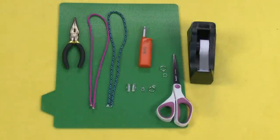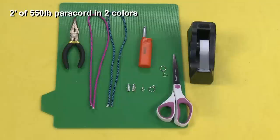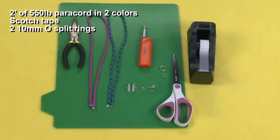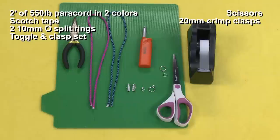For this project you will need two feet of 550 pound weight paracord in two different colors, scotch tape, two 10 millimeter O split rings, one toggle clasp set, scissors, 20 millimeter crimp clasps, needle nose pliers, and a lighter.